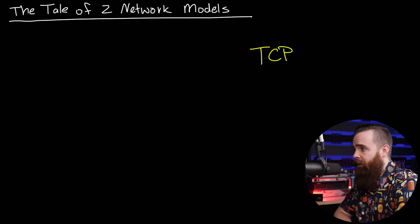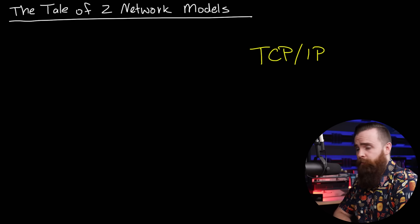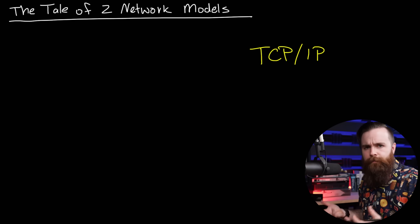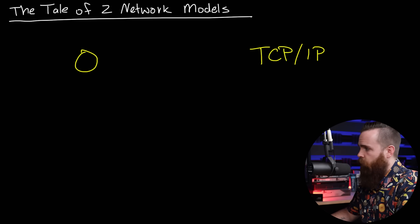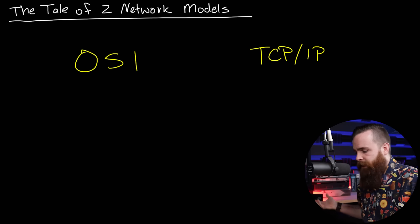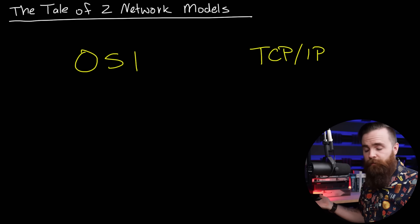We actually ended up with two models: one that we actually use, and one that we still cling onto and talk about all the time. The model we use today is called TCP/IP. This is what every computer supports and has implemented — the TCP/IP model, also called the TCP/IP stack. The other model wanted to be the one that won so badly. People were campaigning for it, but it just did not win. TCP/IP won for a variety of reasons — it's just more widely adopted. So then why are we still talking about the other one if TCP/IP won? I'll show you.